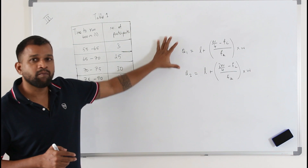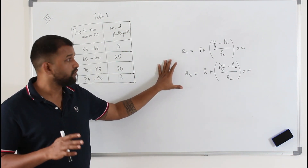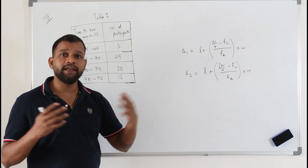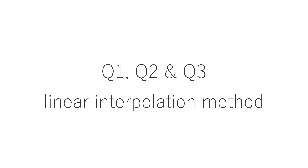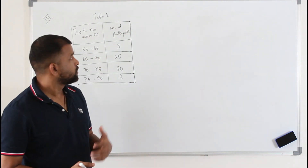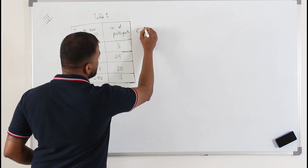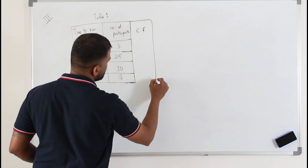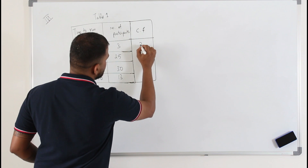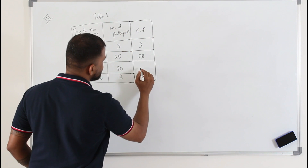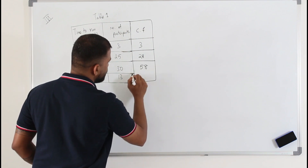I have seen some students using that formula — if you know it, feel free to use it. But what I am going to teach you here is called linear interpolation. To find Q1, Q2, and Q3 using linear interpolation, you need the cumulative frequency, so find the cumulative frequency first.